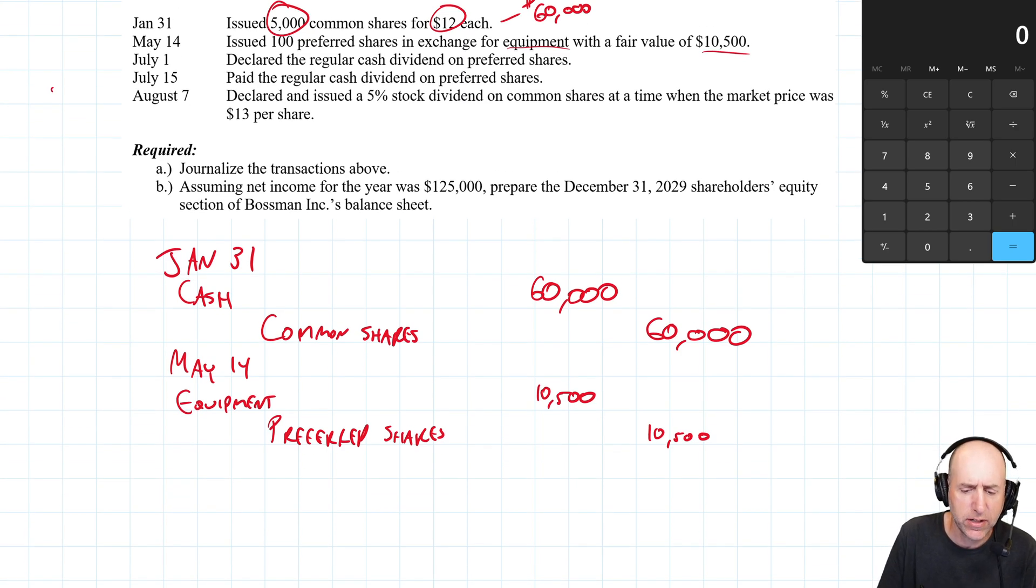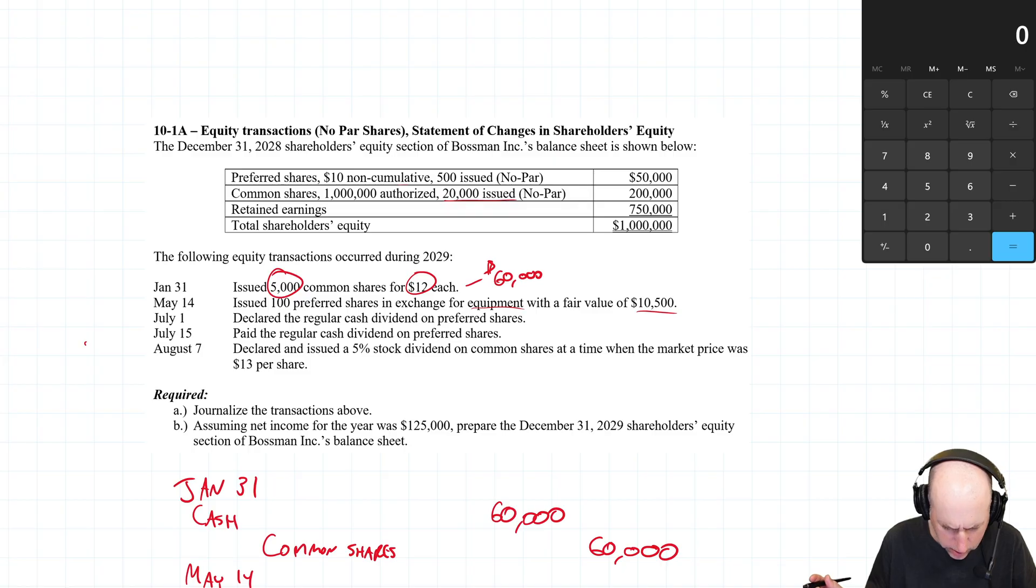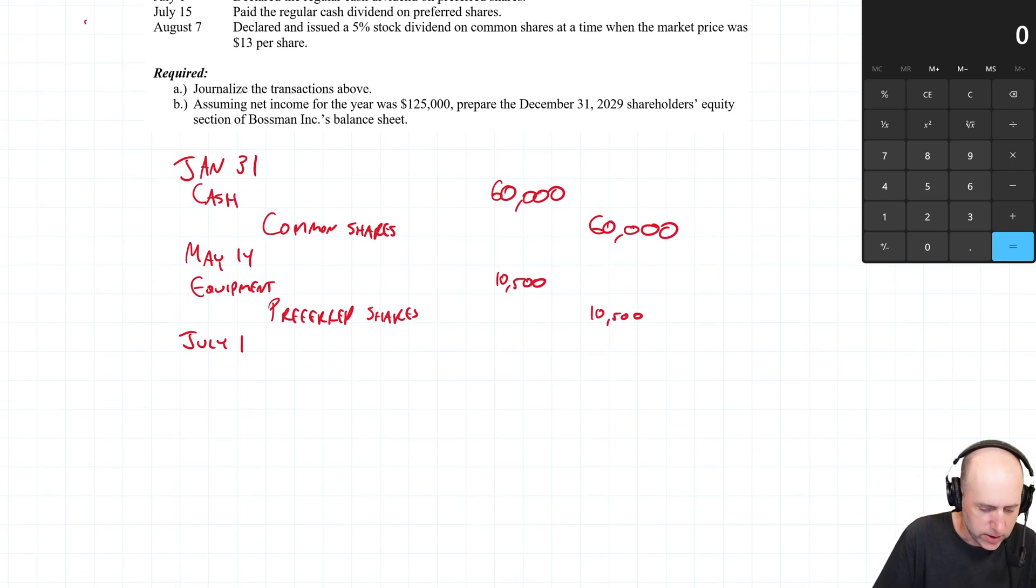Declared the regular cash dividend on the preferred shares. July 1st, Canada Day. Okay. Well, how many preferred shares are there? There were 500. And there were $10 shares. So, 500 times 10 is 5,000. But wait, we issued 100 more shares. So, how many preferred shares do I have? I have 500. And then I just issued 100 shares. I have 600 shares on which I'm paying a $10 dividend. That's $6,000 worth of dividends.